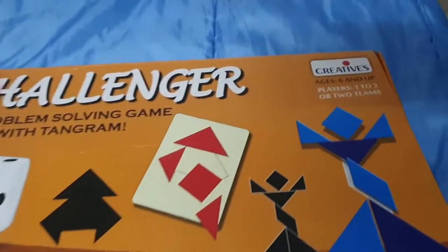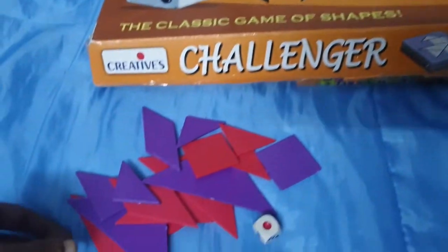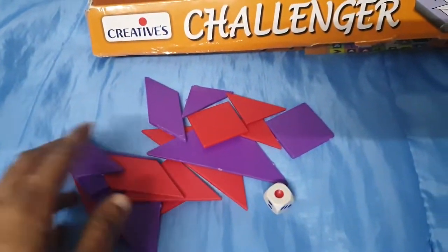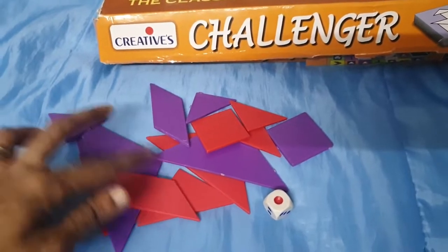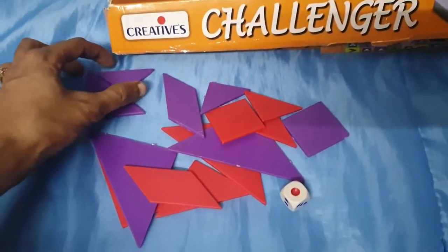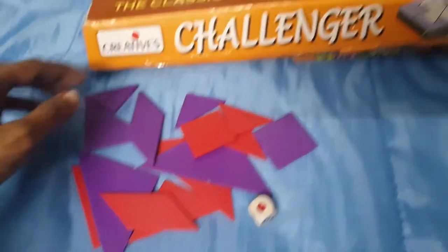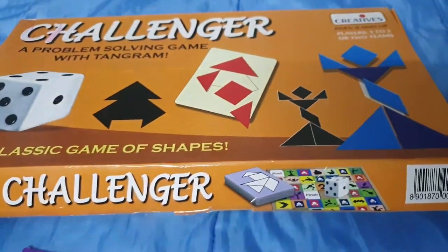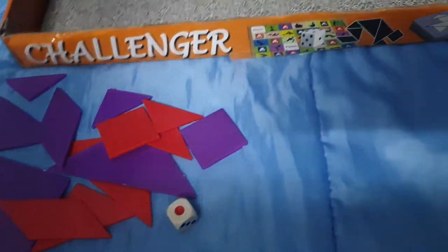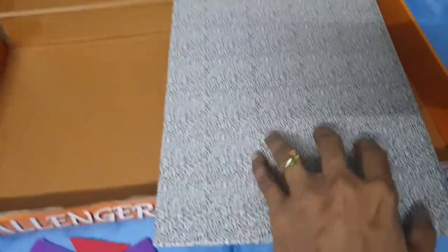Let's see what's inside the Challenger. It's a tangram game, so they gave two sets of tangrams. We can put them together to make a big square and we can make different shapes. It comes along with a lot of cards and a game board.